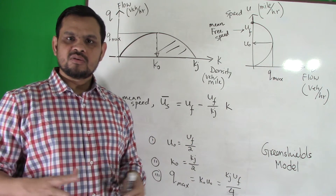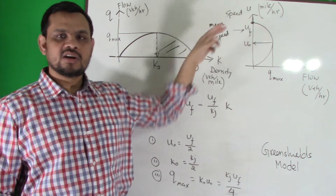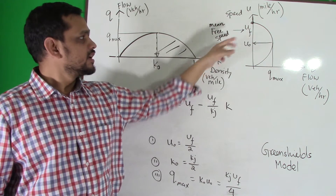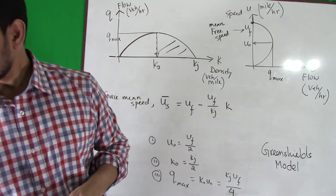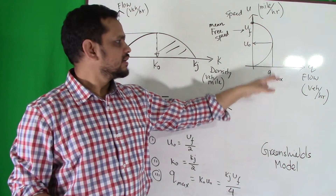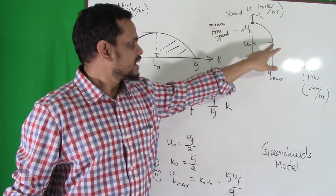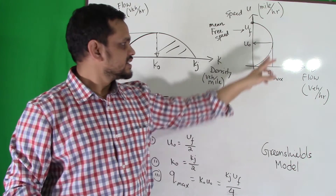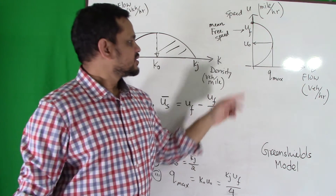At that ideal condition, the maximum speed you can drive is called mean free speed. Then speed decreases as flow increases, because you will be disturbed by other vehicles. After some time, flow reaches a maximum. If traffic increases further and flow decreases, speed eventually comes to zero.